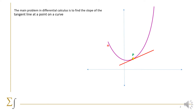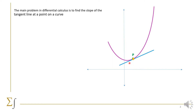Now let's do the same thing from the left side. Q is getting closer and closer to P from the left side. Here is the secant line, and then we get closer and closer. Here is the secant line again, and then Q coincides from the left side on P. We have the secant line will be the blue tangent line.